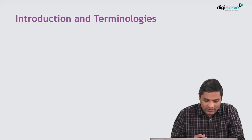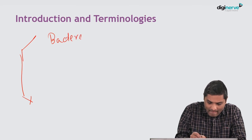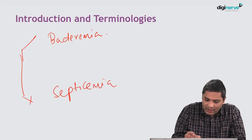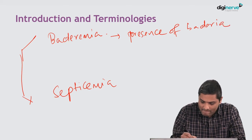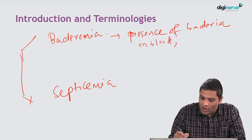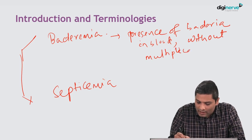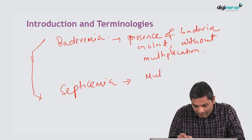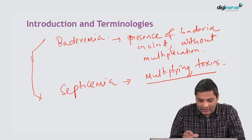Coming to the terminologies, there are two important terminologies to remember. One is Bacteremia and the other is Septicemia. Bacteremia means presence of bacteria in blood without any multiplication — the bacteria does not multiply, it is only present in blood. That is a less serious condition. If the organism starts multiplying and producing toxins, this condition is called Septicemia.